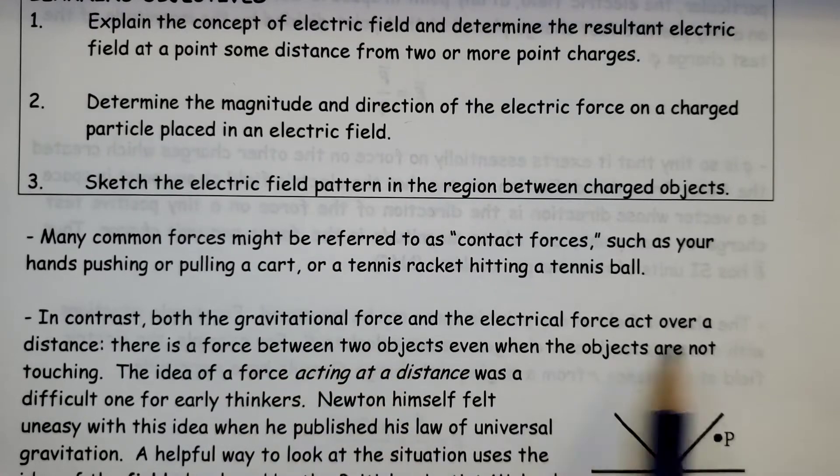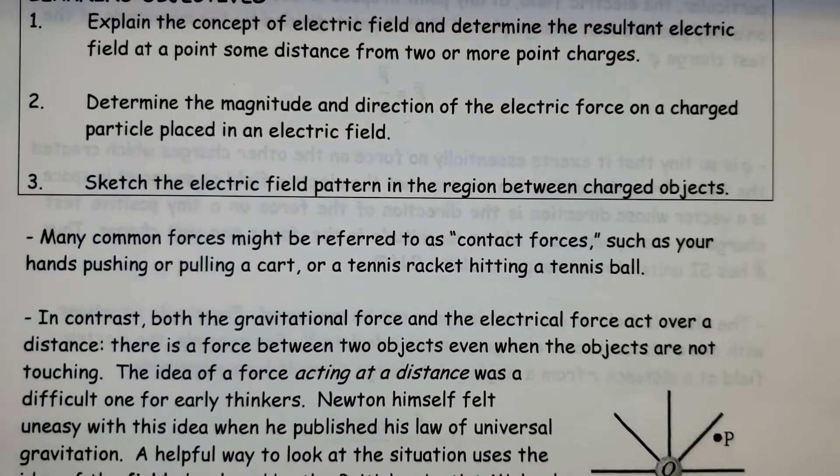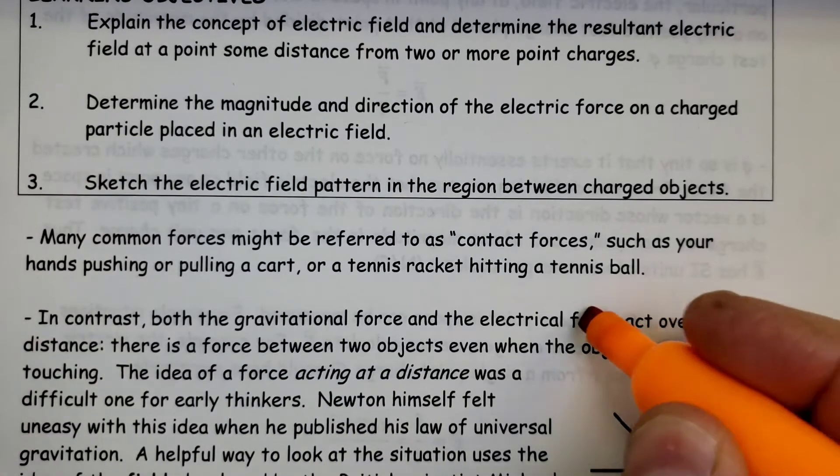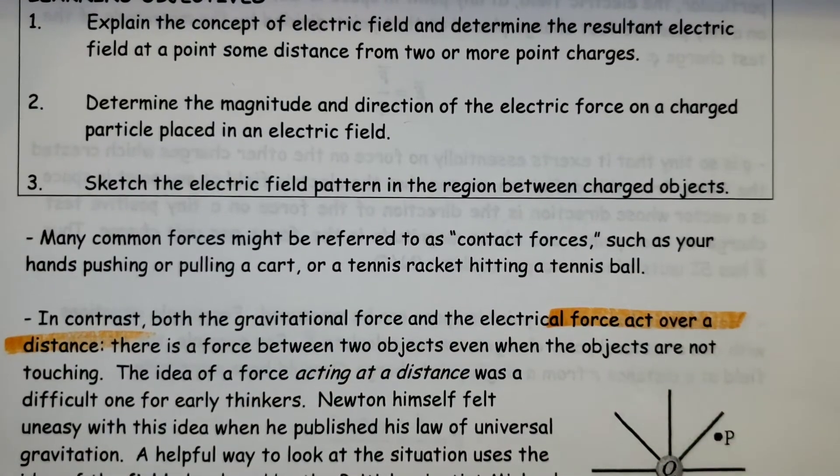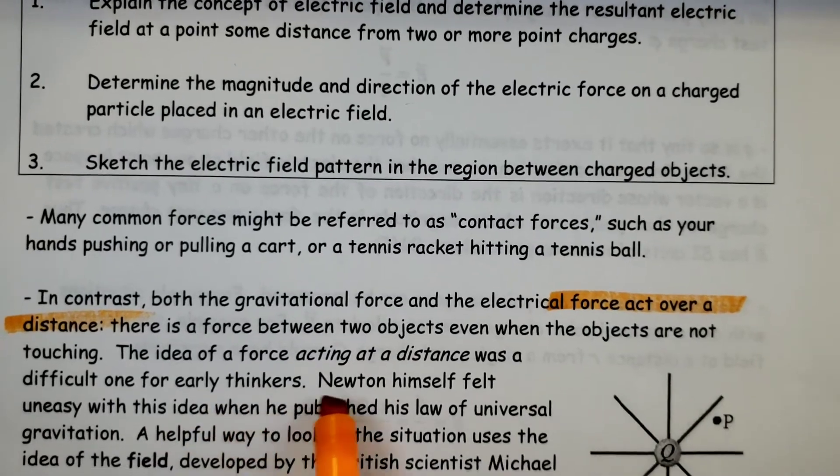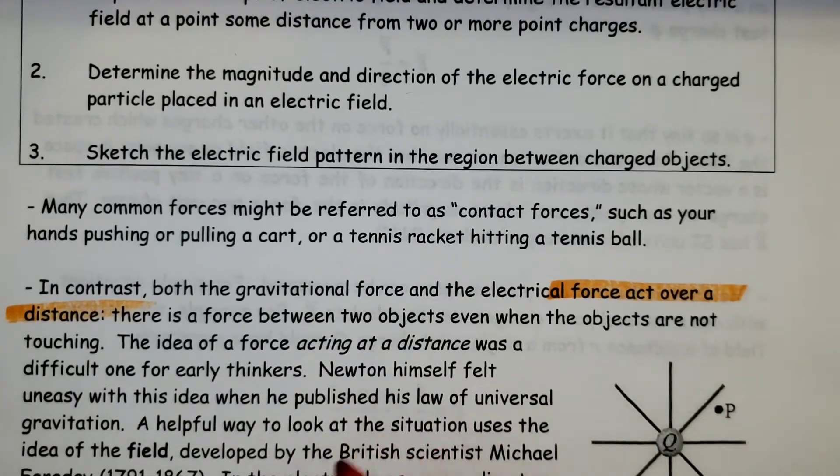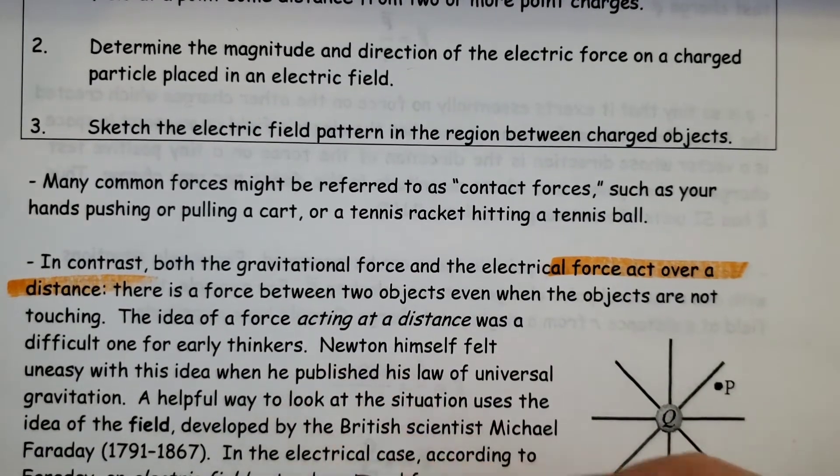In contrast, both gravitational force and electric force act over a distance. There is a force between two objects, even when the objects are not touching. The idea of a force acting at a distance was difficult for early thinkers.